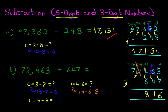Now as for the thousands it's one minus zero, so that remains one. And the ten thousands we've got seven minus zero, so that remains seven. So our answer is seventy-one thousand eight hundred and sixteen. It's very simple, once you follow the same principles we've used in this tutorial and several other tutorials. So that is how we subtract a five-digit number and a three-digit number.